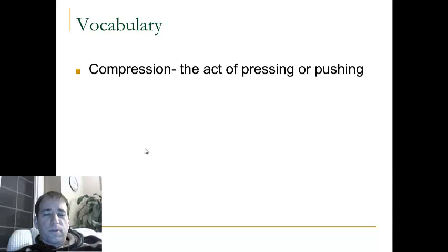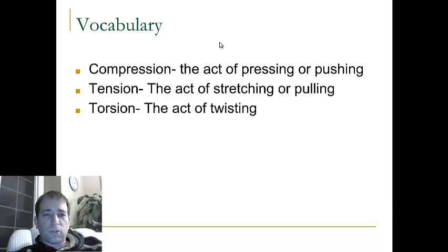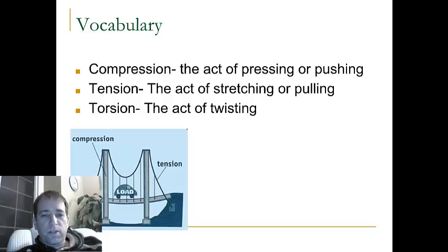We're going to talk about some bridge vocabulary. First is compression. Compression is the act of pushing or pressing on an object. Tension is the act of stretching or pulling. Torsion is the act of twisting. Each of those words have an effect on bridges because of the loads, and also because of the weather.